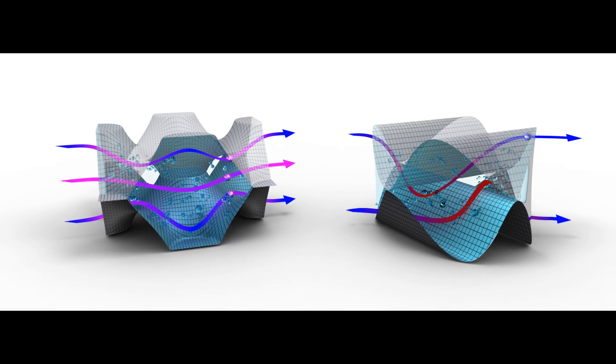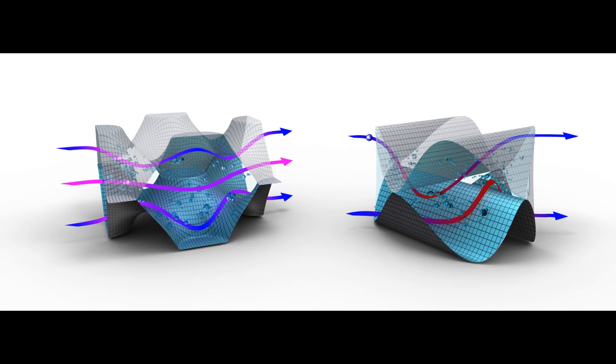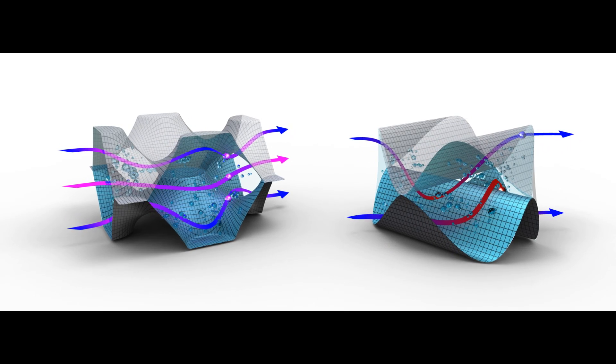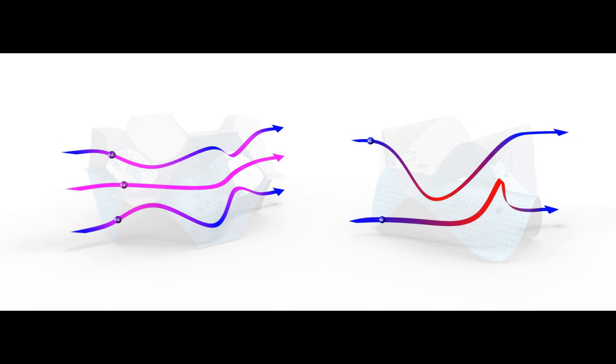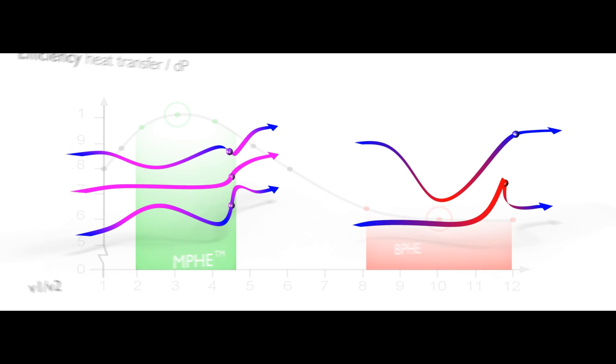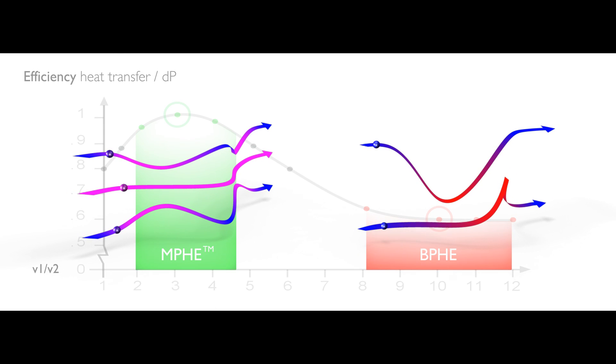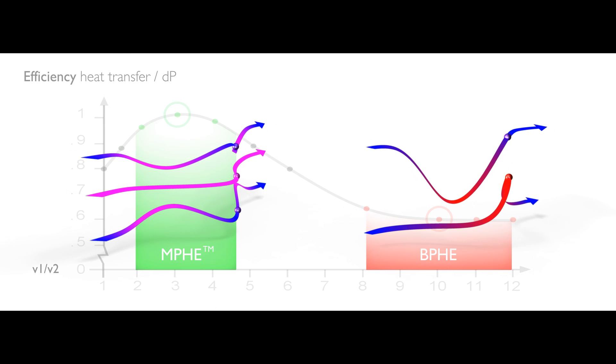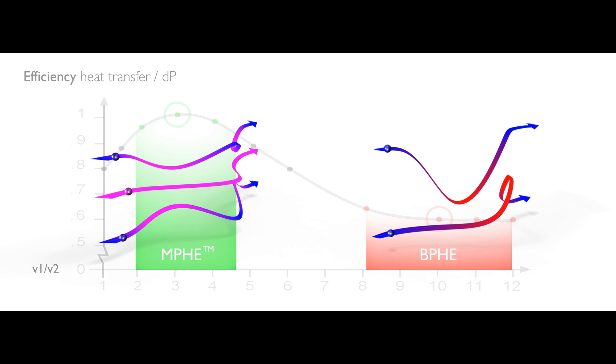In the traditional model, water in the fastest moving areas flows ten times faster than in the slowest. By contrast, in our new model, the difference is only three times, which means better heat transfer, lower pressure loss and the system requires less pump power.